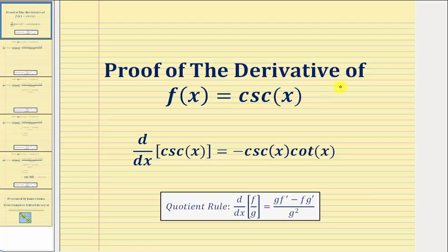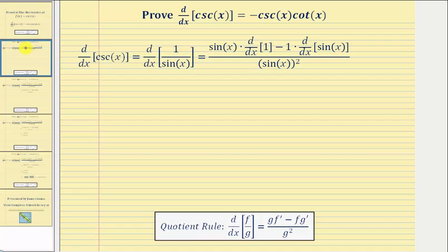Welcome to a proof that the derivative of cosecant x with respect to x equals negative cosecant x times cotangent x. To begin, we'll use the reciprocal identity and rewrite cosecant x as one over sine x, and then we'll find the derivative of one over sine x with respect to x using the quotient rule.